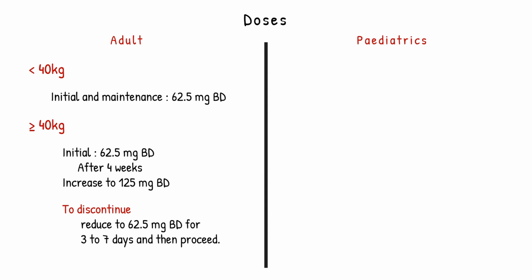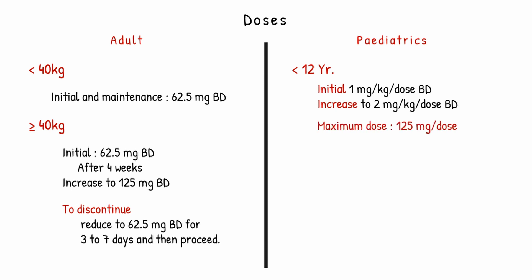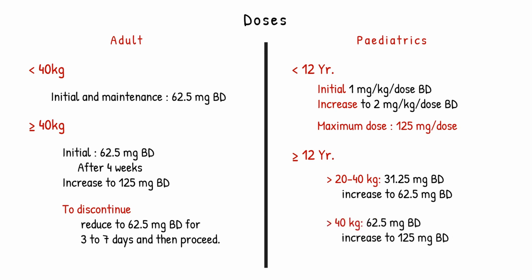For pediatrics, if the patient age is less than 12 years, initiate the dose at 1 mg/kg/dose twice a day and then increase to 2 mg/kg/dose twice a day; the maximum dose should be 125 mg per dose. If the patient age is greater than or equal to 12 years, dosing is weight-based: for 20 to 40 kg, initiate at 31.25 mg twice a day and increase to 62.5 mg twice a day; for above 40 kg, initiate at 62.5 mg twice a day and increase to 125 mg twice a day.